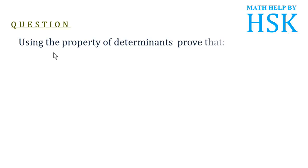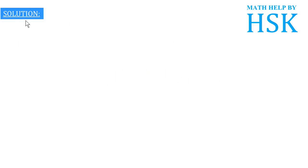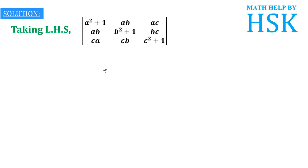The question is: using the property of determinants, prove that the determinant with entries a²+1, ab, ac in row 1; ab, b²+1, bc in row 2; ca, cb, c²+1 in row 3 is equal to 1 + a² + b² + c². To solve this, we first take the left-hand side, which is that 3×3 determinant.